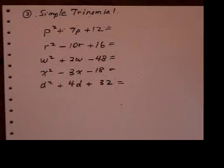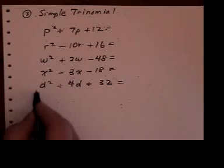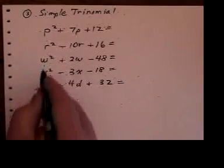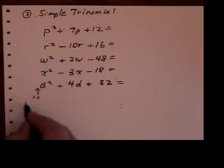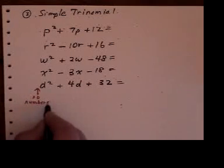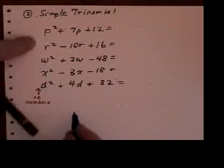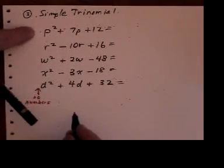This is the third type of factoring. It's called a simple trinomial. The reason we call it a simple trinomial is if you look up this column, there are no numbers, absolutely no numbers in front of the squared term on any one of these. Or you can think of the number in front there as being 1.